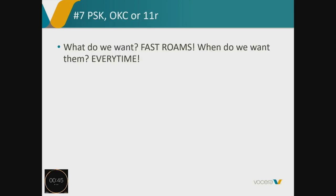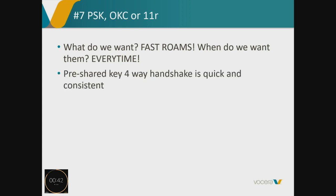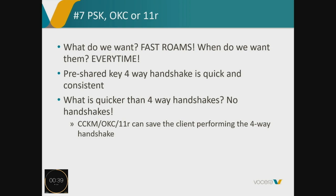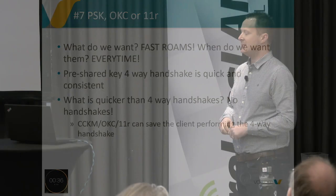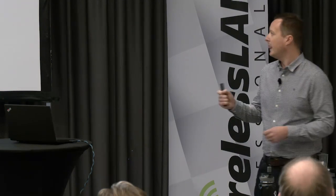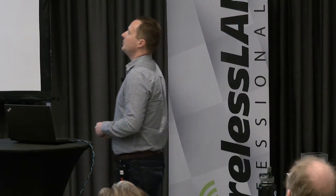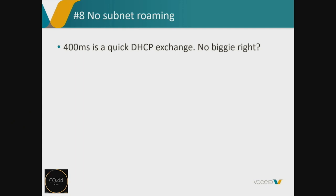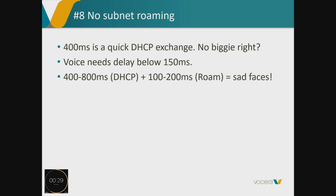For fast roams, pre-shared key is quick and consistent, but even quicker is 11r, CCKM, or OKC — please use those. If you're using 802.1X, do not make a voice client perform a full RADIUS exchange every time — you will have a break in audio every single time. On subnet roaming: 400 milliseconds seems quick, but a DHCP exchange can be really long for a voice client that needs under 150 milliseconds. Don't have voice clients roaming between subnets when changing floors or buildings — give them one big subnet so they keep their IP.